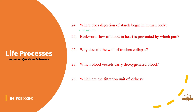Question 25: Backward flow of blood in the heart is prevented by which part? Answer: Valves in the heart. Question 26: Why doesn't the wall of the trachea collapse? Answer: Due to cartilaginous rings.